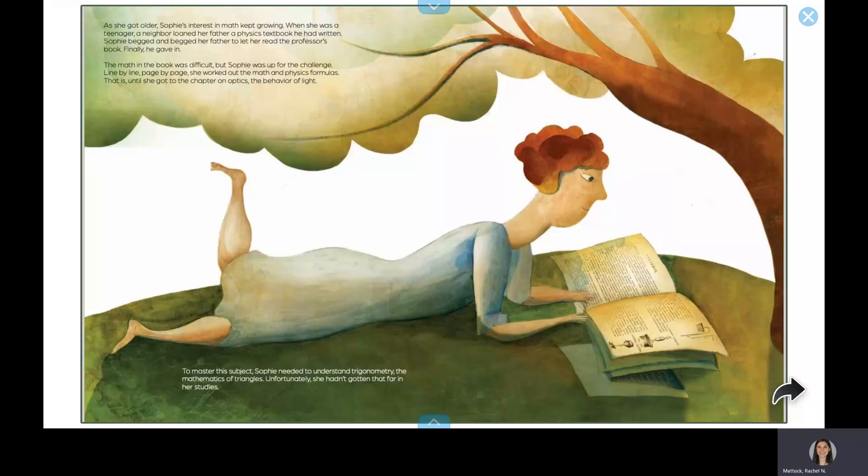As she got older, Sophie's interest in math kept growing. When she was a teenager, a neighbor loaned her father a physics textbook he had written. Sophie begged and begged her father to let her read the professor's book. Finally, he gave in. The math in the book was difficult, but Sophie was up for the challenge. Line by line, page by page, she worked out the math and physics formulas.